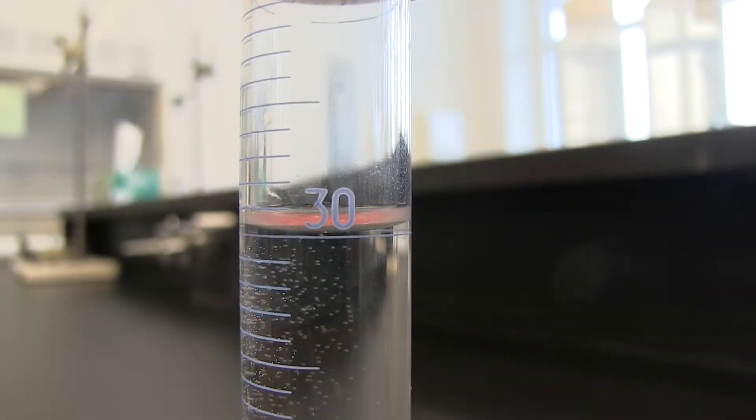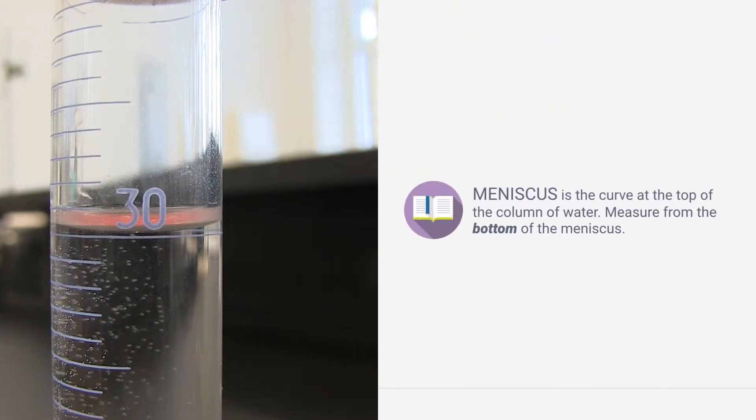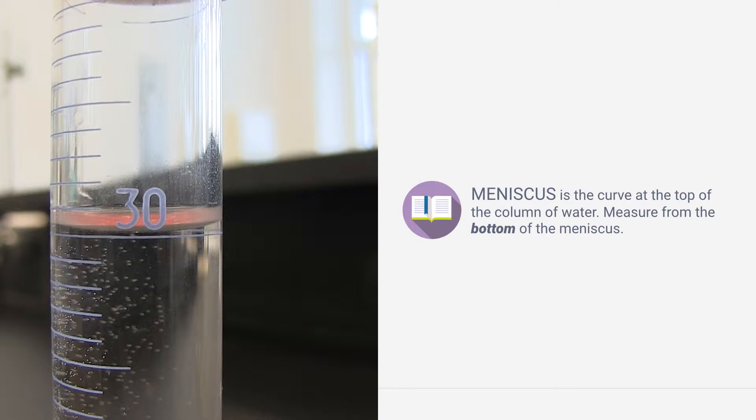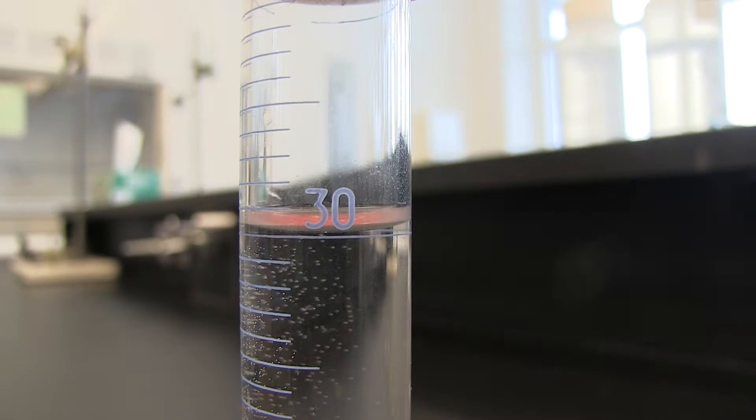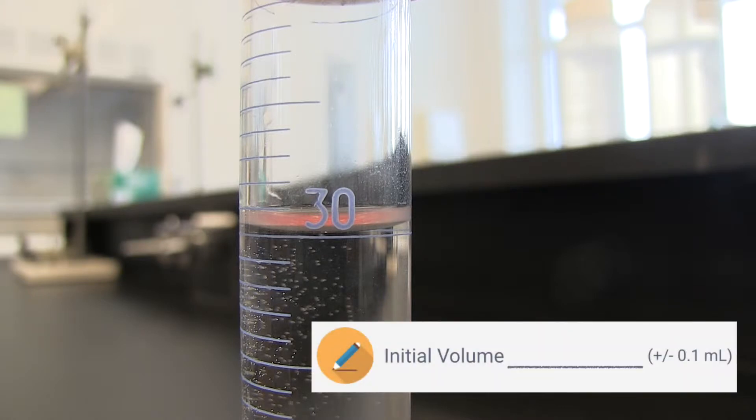One more thing, you need to know what a meniscus is. If you look at the column of water in the cylinder, you'll notice that the top part is curved slightly. This curve is called the meniscus. When you do your measurements, make sure to measure from the bottom of the meniscus. So for this example, 30.0 milliliters is our initial volume.